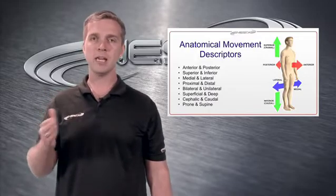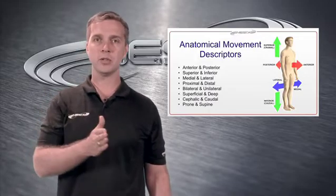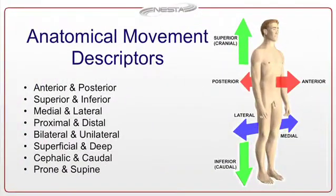Anterior and posterior: anterior is towards the front of the body, posterior is towards the rear of the body. Superior versus inferior: superior is above a reference point — for example, the nose is superior to the chin, while the nose is inferior to the eyes. Inferior is below a reference point.